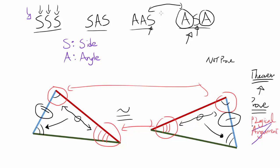So AAS is basically ASA with one more step — if two angles are the same, then the third angle has to be the same, so AAS is applying ASA with one additional step. And that's the summary of triangle congruency postulates.